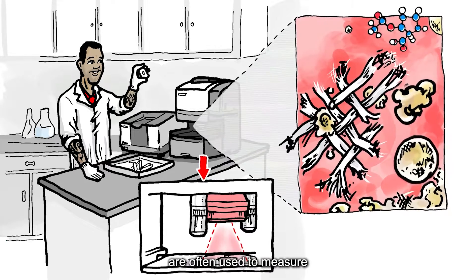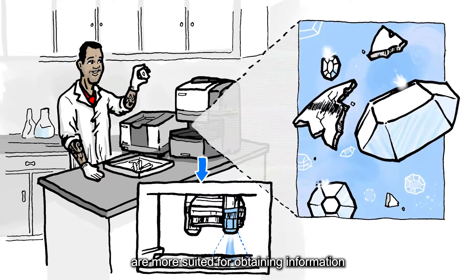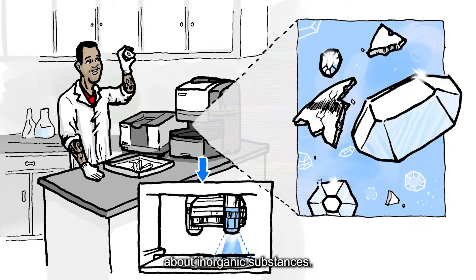Infrared microscopes are often used to measure organic substances, while Raman microscopes are more suited for obtaining information about inorganic substances.